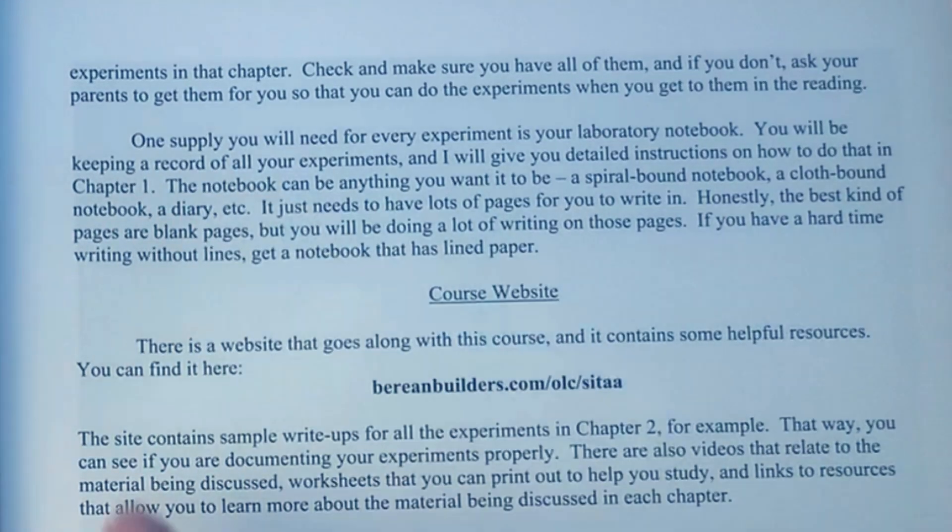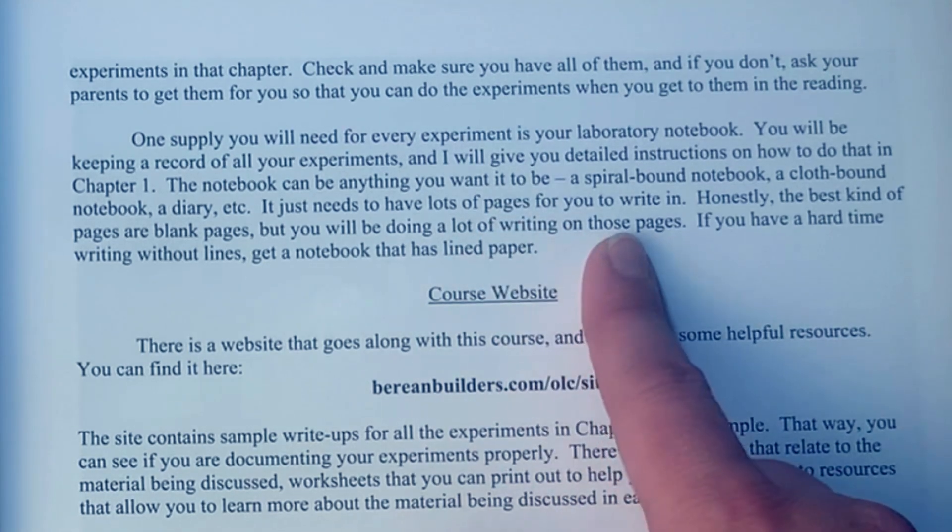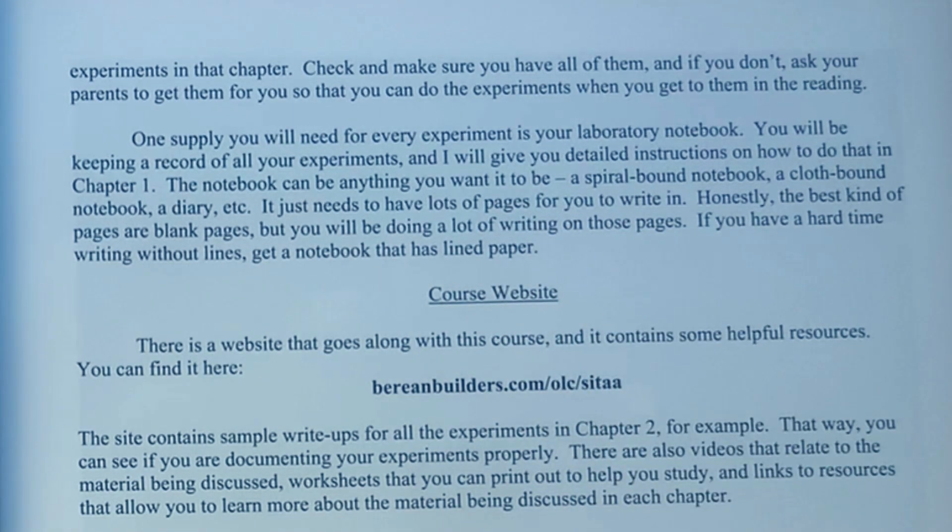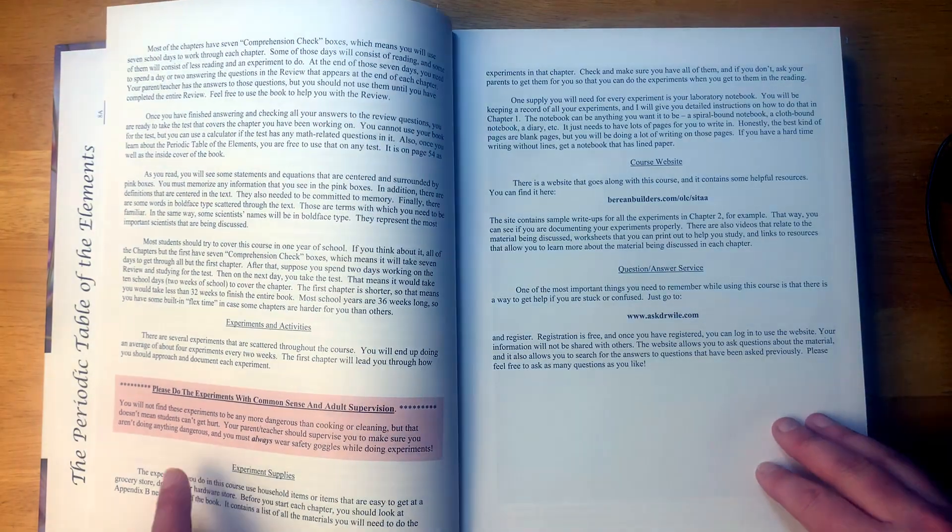It says one supply you will need for every experiment is your laboratory notebook. You will be keeping a record of all your experiments and I will give you detailed instructions on how to do that in chapter one. The notebook can be anything you want it to be. A spiral bound notebook, a cloth bound notebook, a diary, etc. It just needs to have a lot of pages for you to write in. Honestly, the best kind of pages are blank pages, but you will do a lot of writing on those pages. If you have a hard time writing without lines, get a notebook that has lined paper.